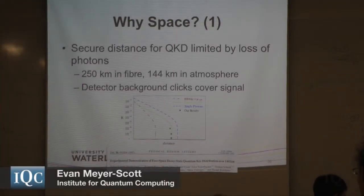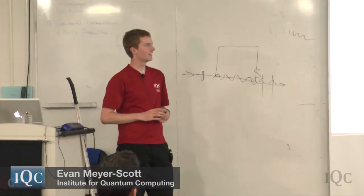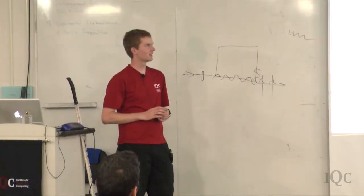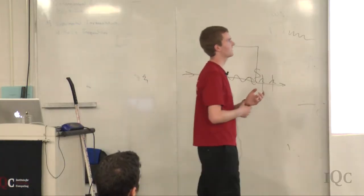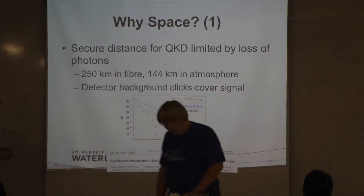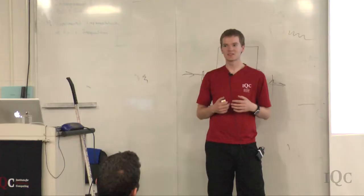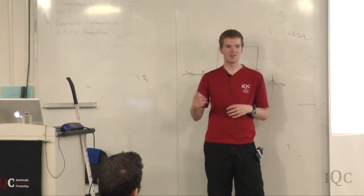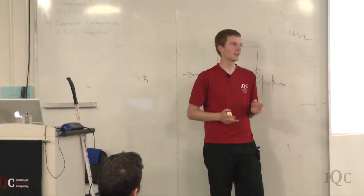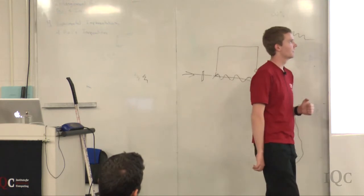QKD in space - why do we even care? It's really hard to build a satellite and really expensive. The secure distance for QKD is limited by the loss of photons. We always lose photons in the atmosphere, through fiber, or whatever. Most photons get lost, and the farther you go, the more get lost.